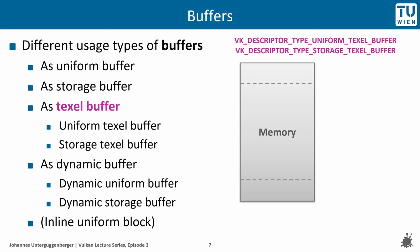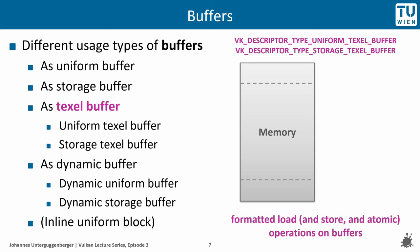Uniform buffers and storage buffers can be used as so-called texel buffers, which are a formatted view onto the original buffers. For example, if a buffer contains a bunch of float values, they can be, through using a texel buffer, grouped into triples of float values, so that one element of such a texel buffer refers to three float values of the original buffer.